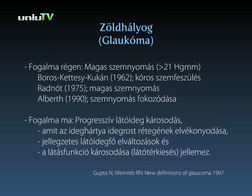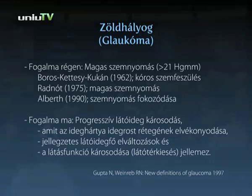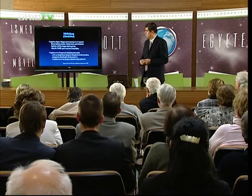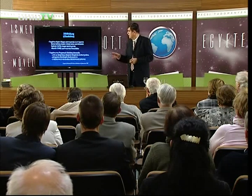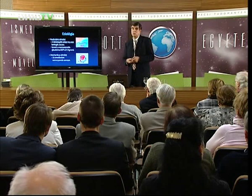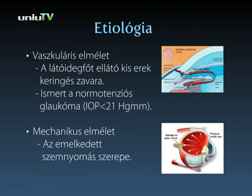Most kezdjük a zöldhályoggal, a glaukomával, aminek fogalma régen összefüggött a magas szemnyomással. Az átlagos szemnyomás 16-21 higanymilliméterig fogadtuk el normálisnak, a fölött beszéltünk zöldhályogról. Manapság megváltozott a zöldhályog fogalma, és progresszív látóideg-károsodásról beszélünk, ami az ideghártya idegrost-rétegének elvékonyodásához, jellegzetes látóidegfő-változásokhoz és látásfunkció-károsodáshoz vezet, ami elsősorban a beteg számára látótér-kiesésben jelenik meg. Van jelenleg egy vaszkuláris elmélet és egy mechanikus elmélet a zöldhályog keletkezésére. A vaszkuláris elmélet a látóidegfőt ellátó kis ereknek a keringési zavarát tartja főokként, és éppen emiatt van olyan zöldhályog, amikor a szemnyomás soha nem magasabb 21 mm-nél, mégis kialakulnak a jellegzetes tünetek – ezért beszélünk normotenziós glaukómáról.